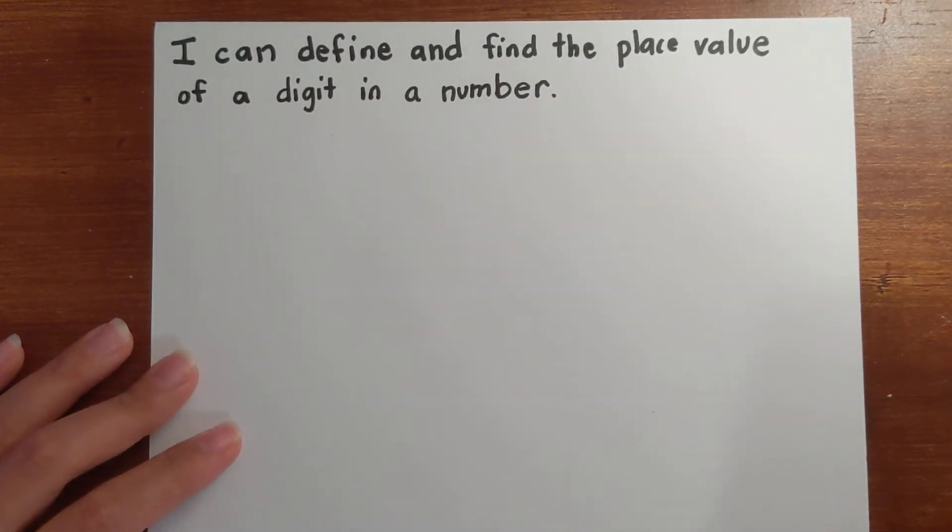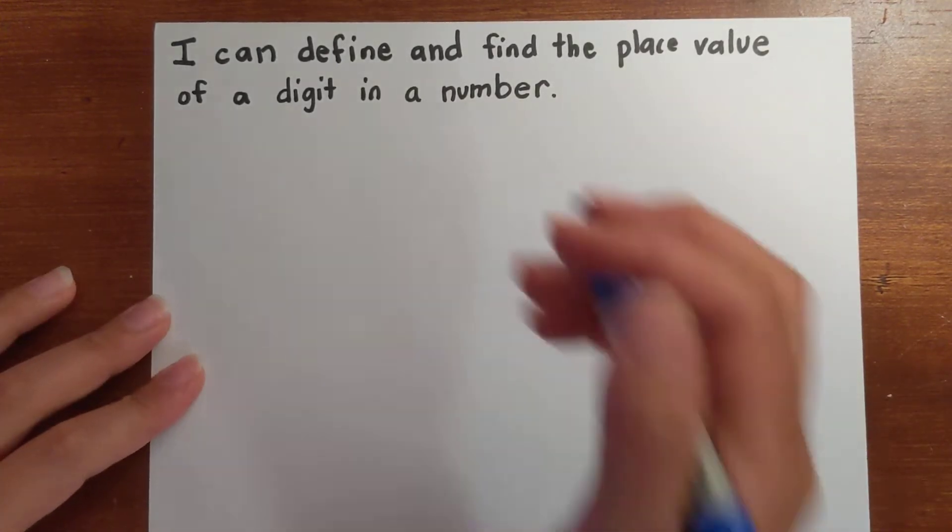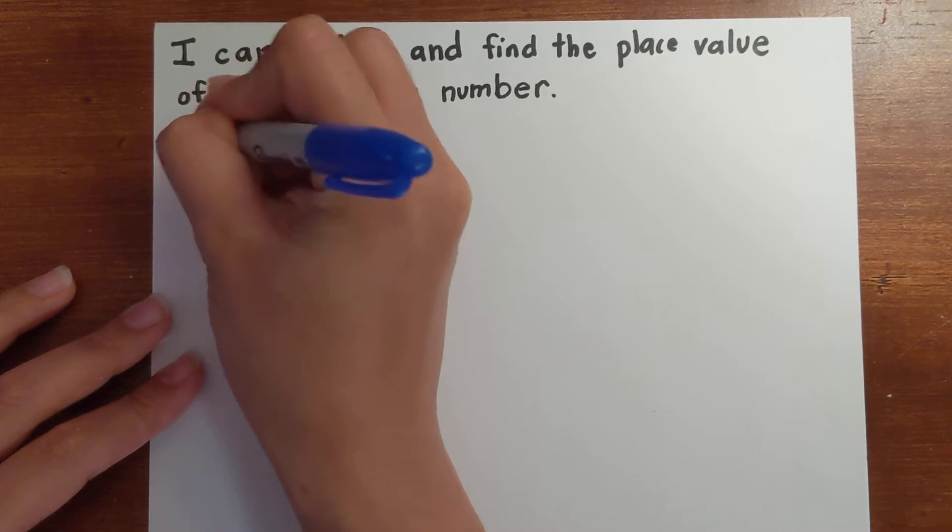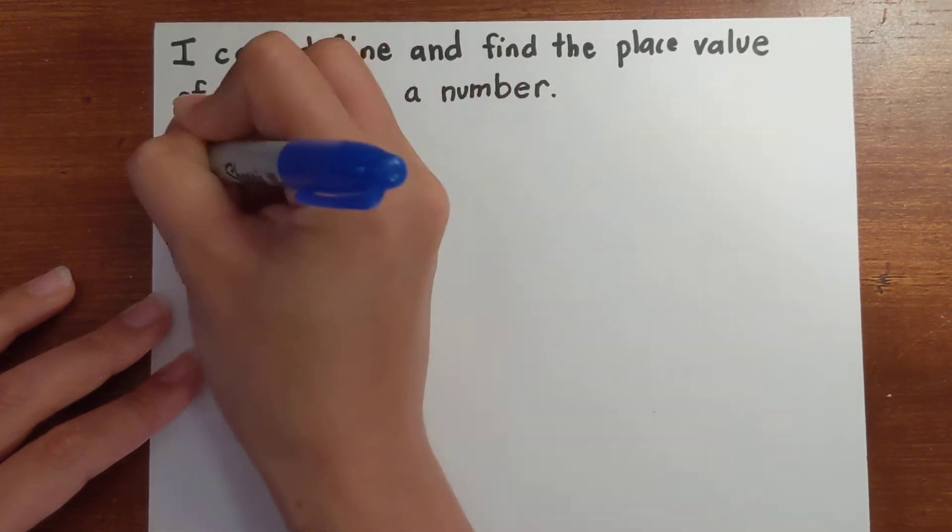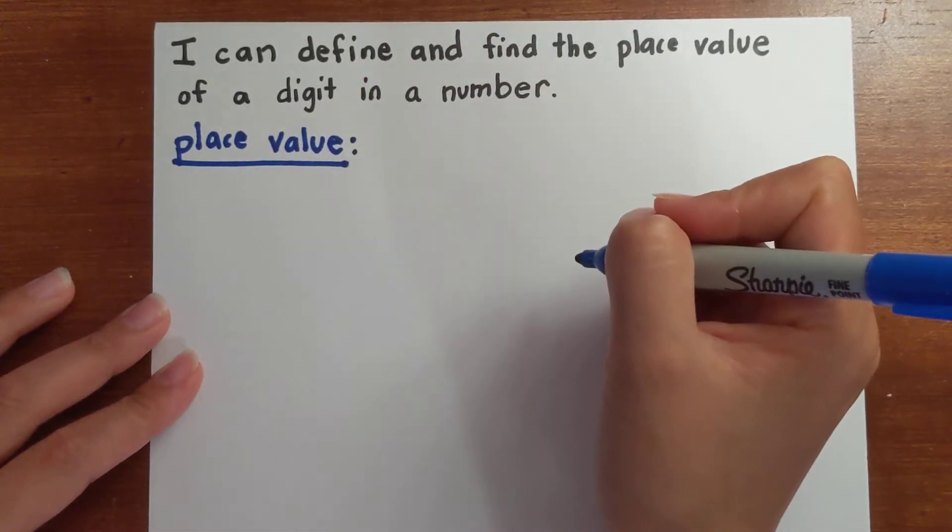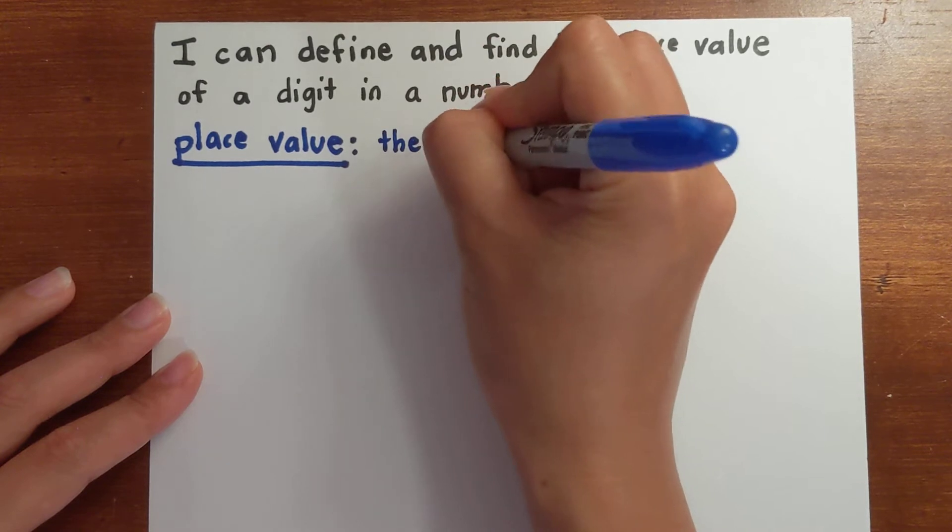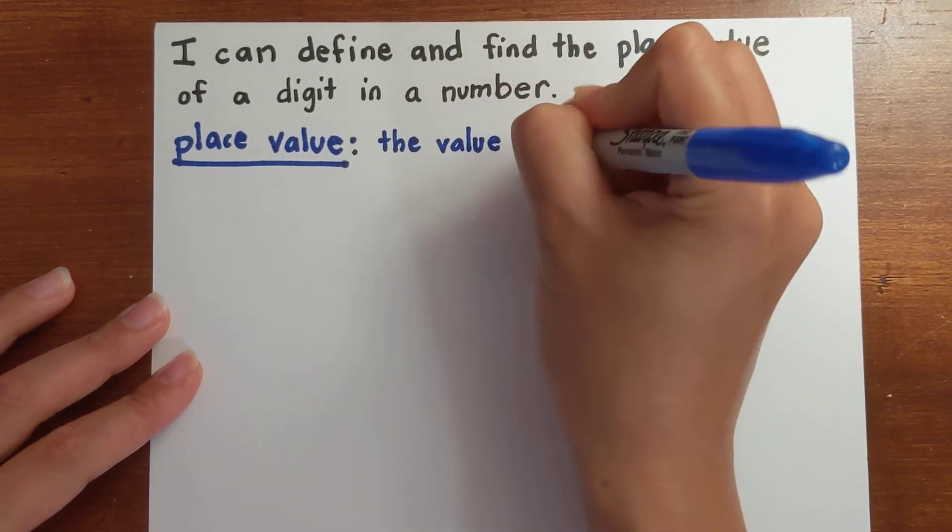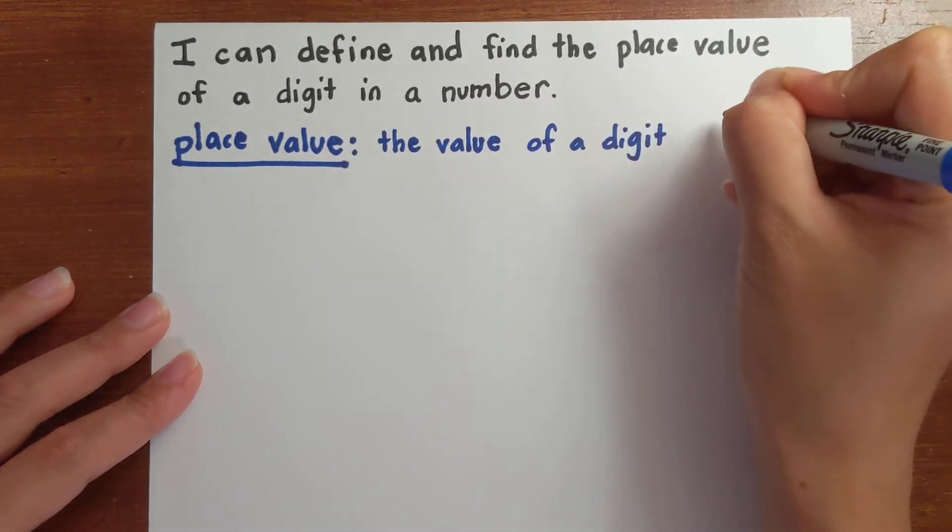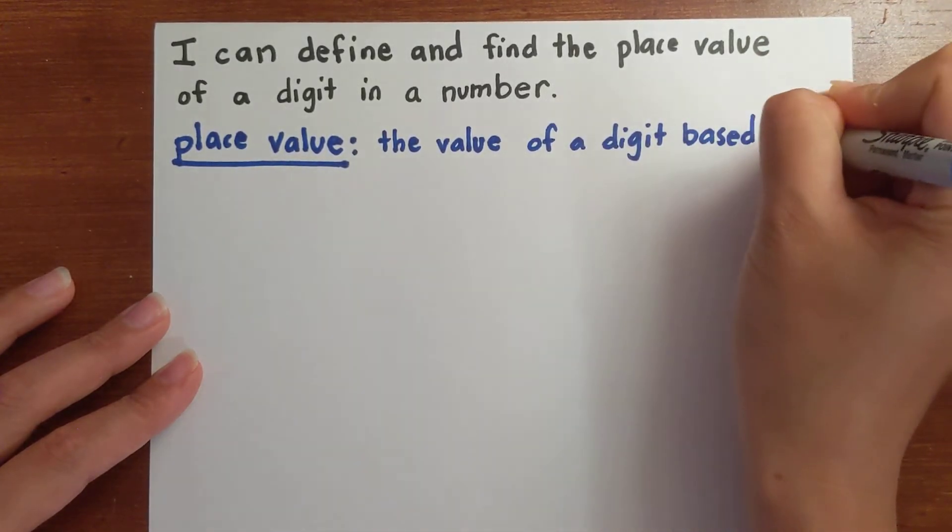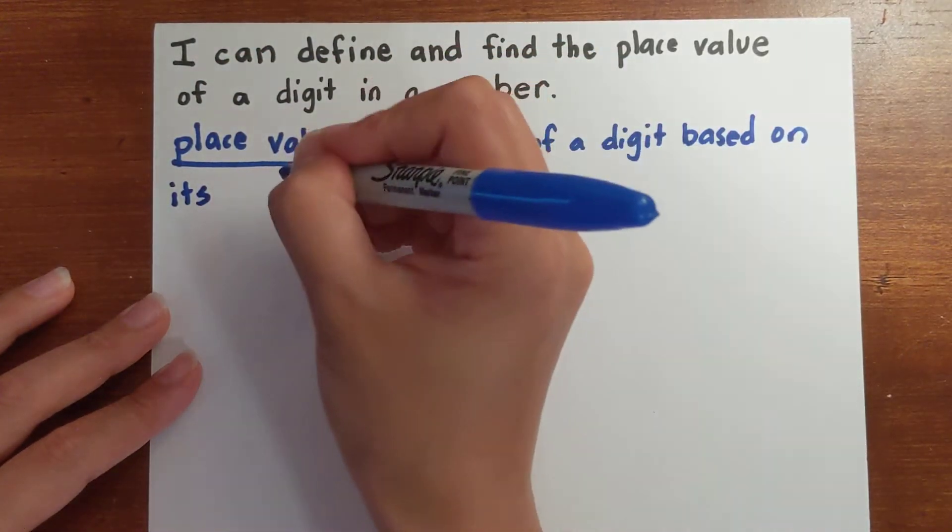So first, let's look at the term place value. Place value is a very important concept. The definition of place value is the value of a digit based on its position in a number.